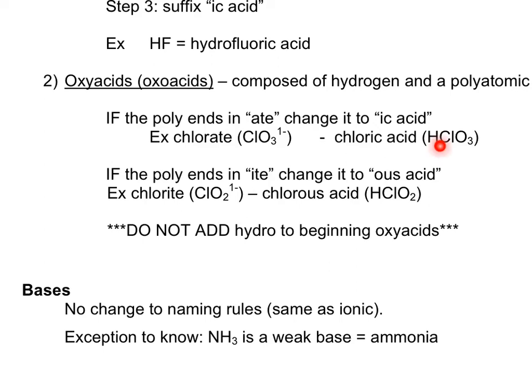Now I can only add one H out front because chlorate is a 1- charge. You add enough H's to balance the charges to 0. You could also crisscross the charges with the H. On the other hand, if the polyatomic ends in ite, then you change the ending so that it becomes an ous acid. Chlorite is ClO₂⁻. Because it ends in ite, when I add an H in front to balance the charge, it becomes chlorous acid.